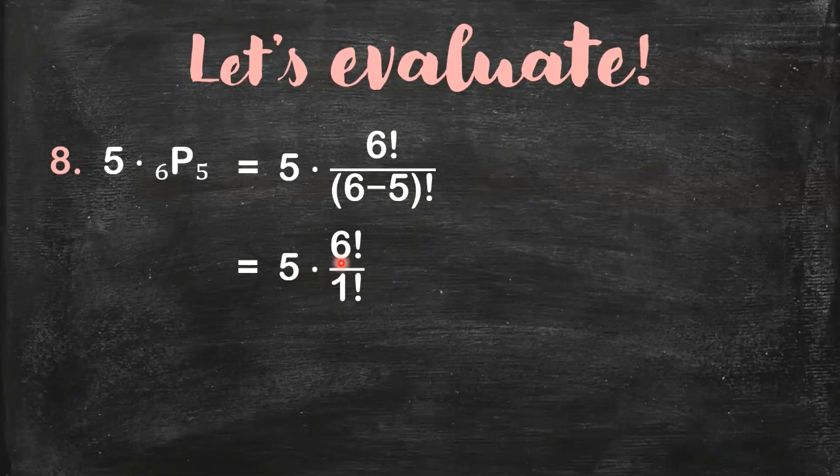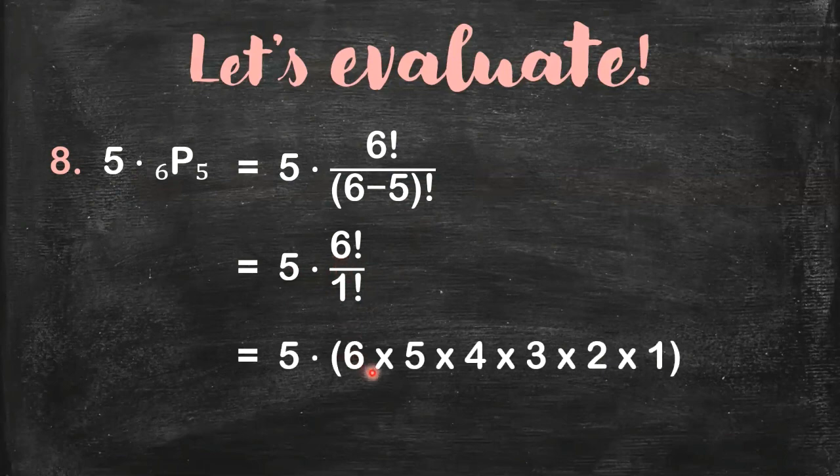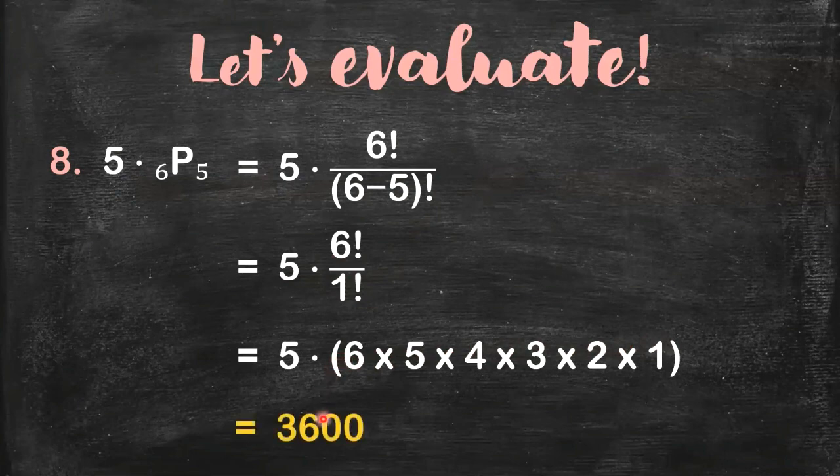6×5×4×3×2×1. So you get the product here. So it's like 6×5, 30. 30×4, 120. Times 3, 360. And then you have 720. 720×5, you will get 3,600.